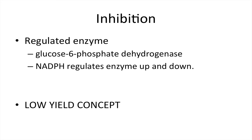Now this is going to be inhibition. This is a pretty low yield concept, but just to be complete, I'll talk about it since inhibition and regulation is a topic that sometimes comes up. The regulated enzyme is glucose 6-phosphate dehydrogenase. You can remember this because G6P is the very first step of the pentose phosphate pathway. So at the very first step, we're going to inhibit it, and we're using NADPH to regulate the enzyme up or down.